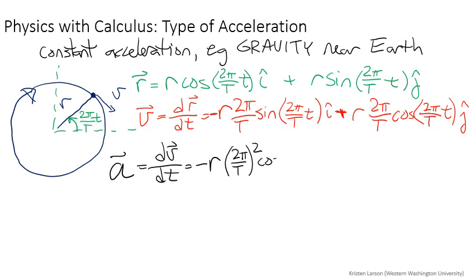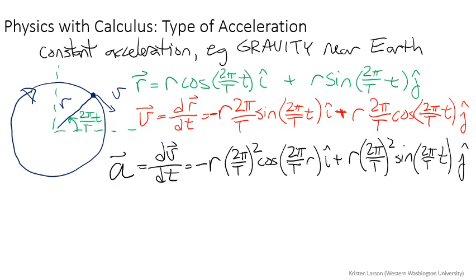This time it's cosine 2π over T times r i-hat, plus r and now another 2π over T squared sine 2π over T times time j-hat.